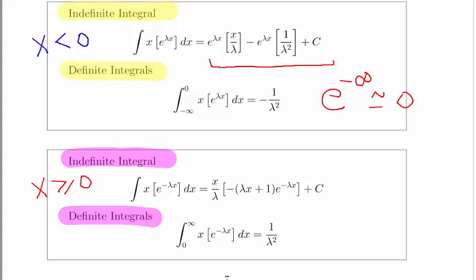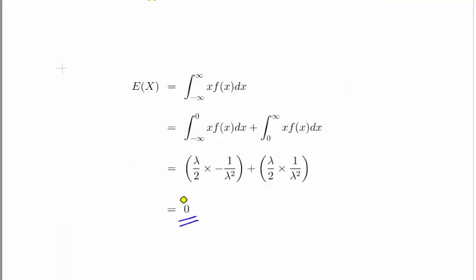Putting everything together to get the expected value of x — which we expect to be 0. The results of the definite integral calculations are minus 1 over lambda squared and plus 1 over lambda squared. We multiply both by lambda over 2, giving minus 1 over 2 lambda plus 1 over 2 lambda, which cancels out. So we get 0 — that's what we're expecting, and that's how we show it.